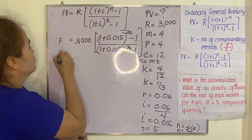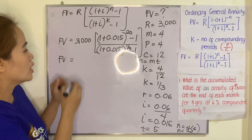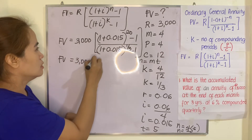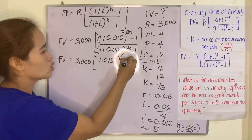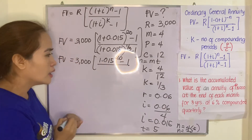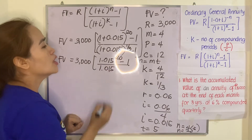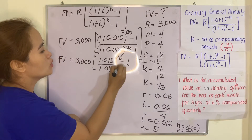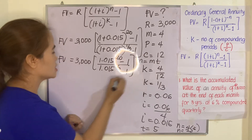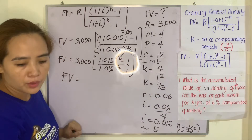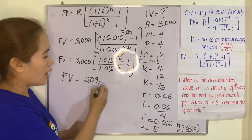So our future value is equivalent to: 3,000 multiplied by (1.015 raised to 20 minus 1), divided by (1.015 raised to 1 over 3 minus 1). When you press this on the calculator, your future value will be 209,150.